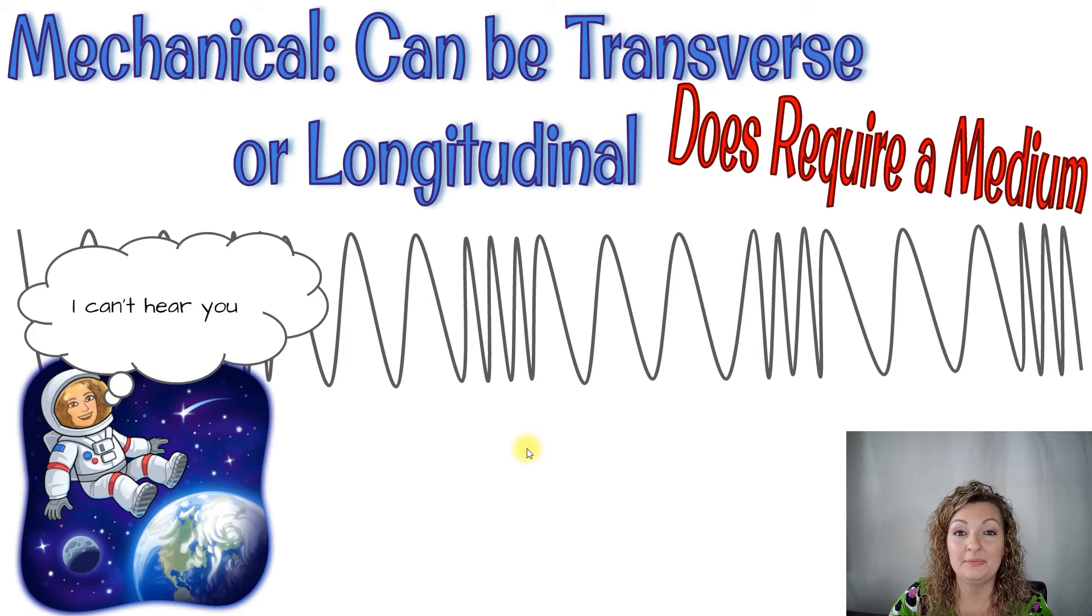So here's an example of a longitudinal mechanical wave for you to see. And remember that sound is a longitudinal wave, so it's a mechanical wave. And that's the reason why we can't hear in outer space. It requires particles to travel or medium to travel. Therefore, there is no sound in outer space.